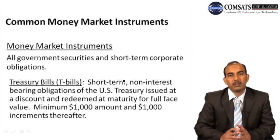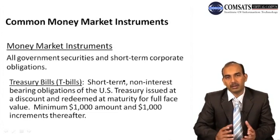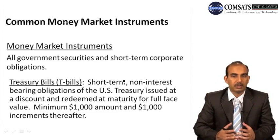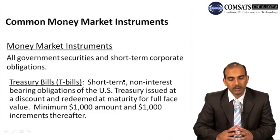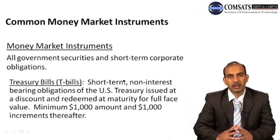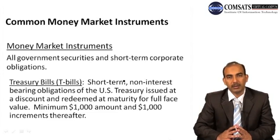What are the common money market instruments? There are many instruments available — they are securities of different denominations issued by governments, corporations, banks, or financial institutions. All government securities and short-term corporate obligations are called money market instruments. One example is Treasury bills, also called T-bills — short-term non-interest-bearing obligations of the US Treasury, issued at a discount and redeemed at maturity for full face value. The minimum value is $1,000 and securities are issued in multiples of $1,000.